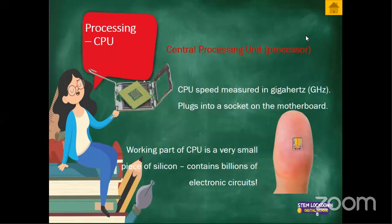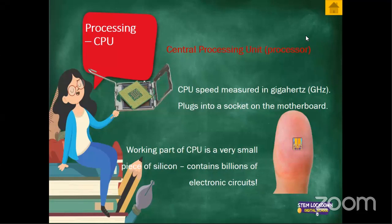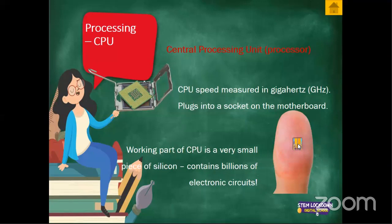The CPU is the brain of the computer where all processing of data takes place, performing calculations and carrying out instructions. We've got two units within it: the arithmetic logic unit — that does the calculations and carries out instructions — and the control unit, which controls how instructions flow. From input into memory, from memory into processing, and so on. We've also got other types of memory like cache — we'll speak about them at a later stage. That's how the mechanism works in the computer system.